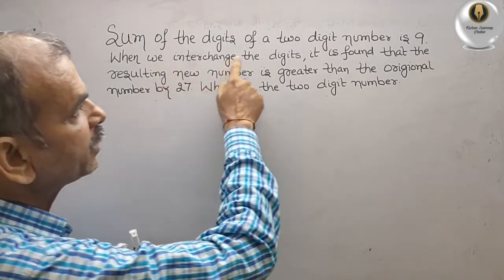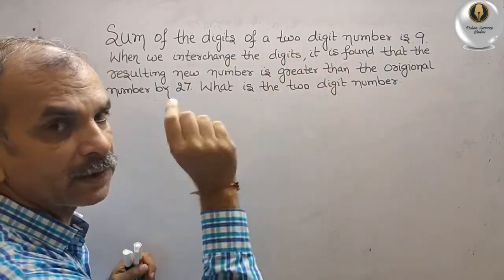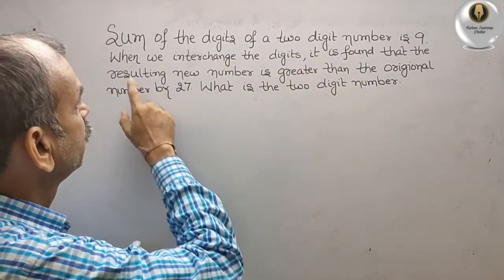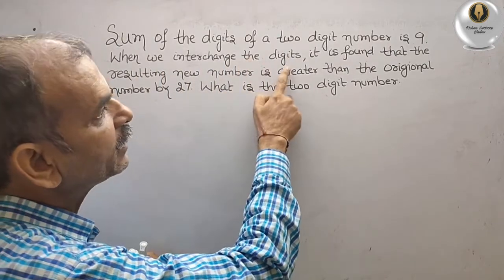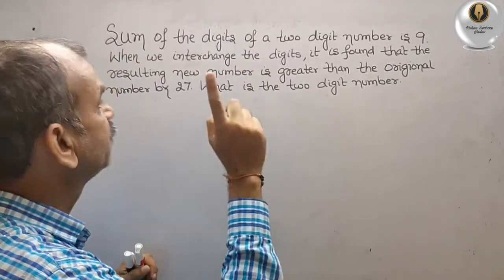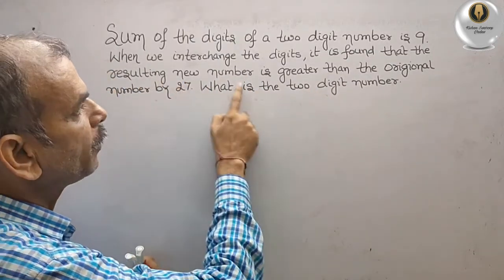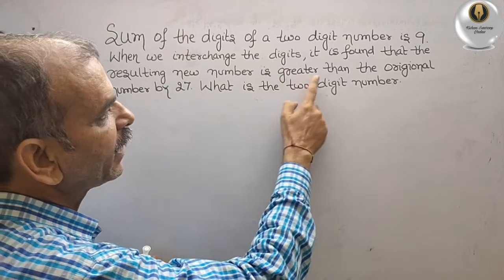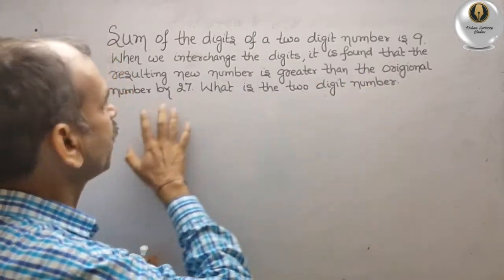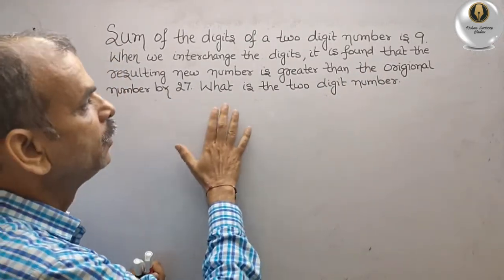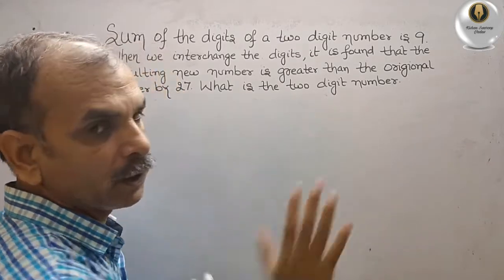The sum of the digits of a two-digit number is 9. When we interchange the digits, it is found that the resulting new number is greater than the original number by 27. What is the two-digit number?